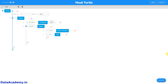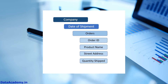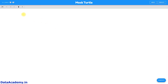Now let's play around with the configuration. Let's delete the pre-built configuration and build our own. Let's create a configuration to simulate product shipments. I'm visualizing the JSON to be something like this: the name of a company, the date of shipment, the different orders that will be shipped that particular day, and within each order we will have the order ID, the product name, the street address, and the quantity shipped.